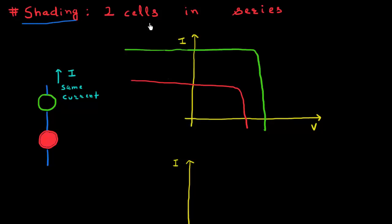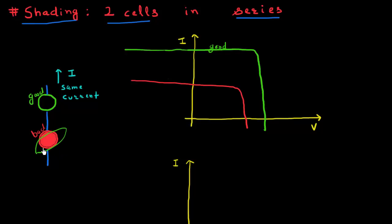Let's consider shading in the case where I have two cells connected in series as shown over here. In green is my good cell, and it has a nice looking IV characteristic like this. And in red, I have my bad cell. This poor guy maybe had a leaf fall on top of it, or had some soil accumulate on top of it, and that has resulted in an IV characteristic which looks like this — I would call this the IV characteristic of my bad cell.